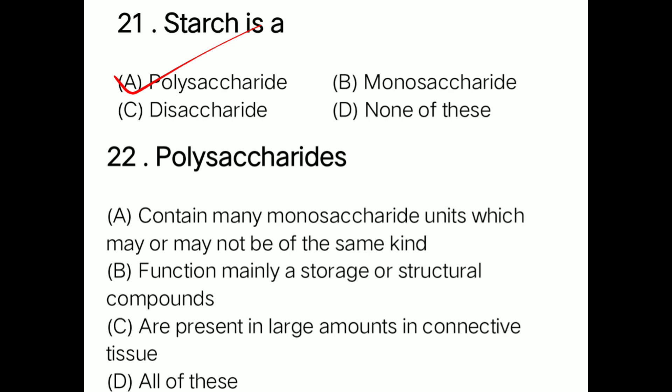Question: Polysaccharide is defined as — option A containing many monosaccharide units which may or may not be of the same kind, option B functioning mainly as storage or structural compounds, option C present in large amounts in connective tissues, option D all of these. Correct answer is option D: all of these. Polysaccharides contain many monosaccharide units, function mainly as storage or structural compounds, and are present in large amounts in connective tissues.